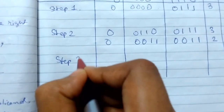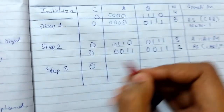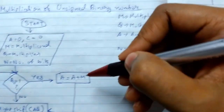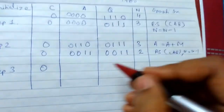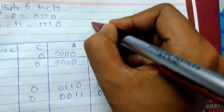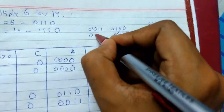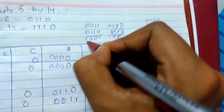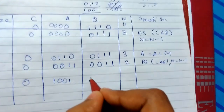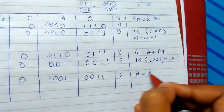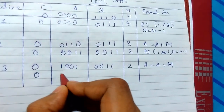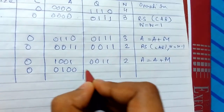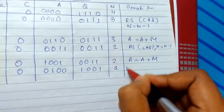Step 3: C is 0. Q0 is 1 again, so we update A. Previous A was 0011, and M is 0110, so 0011 + 0110 = 1001. A is updated to 1001. We then right shift, giving A = 0100 and the shifted-in bits continue into Q. Right shift C A Q and N = N - 1.